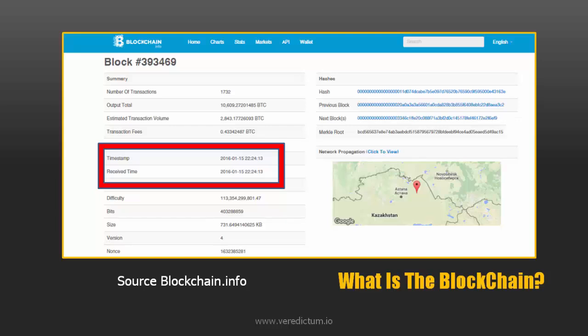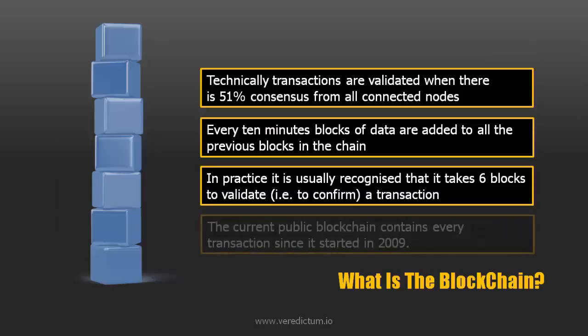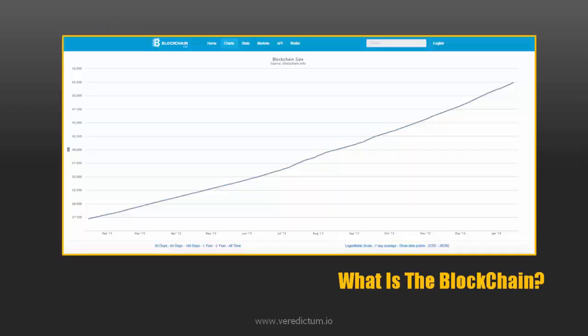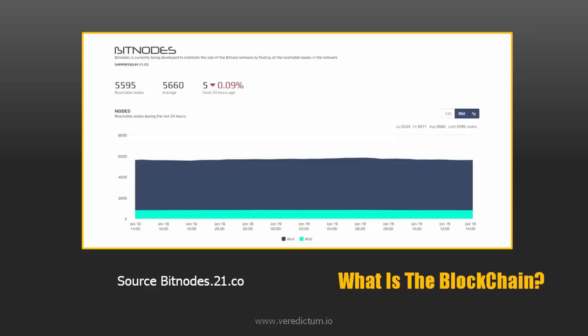One thing to note is that every historical Bitcoin transaction is stored on the public blockchain. This has been in place since it started in 2009. This actually means the size of the blockchain overall is now about 52.5 gigabytes in size, and that's doubling every year. Currently on the public blockchain, each of the 5,600 connected computers holds a copy of the permanent blockchain dating back to 2009.